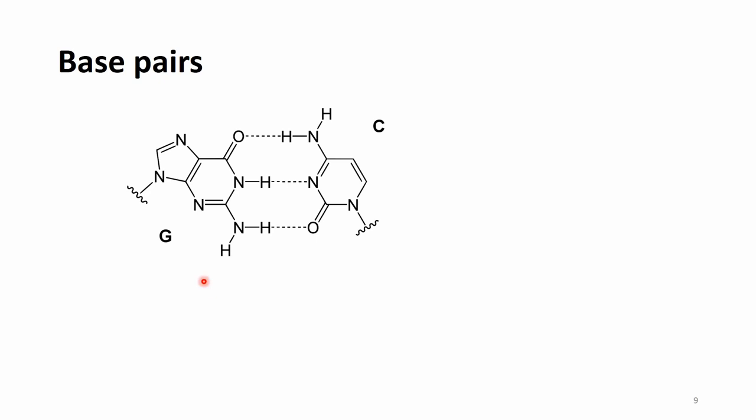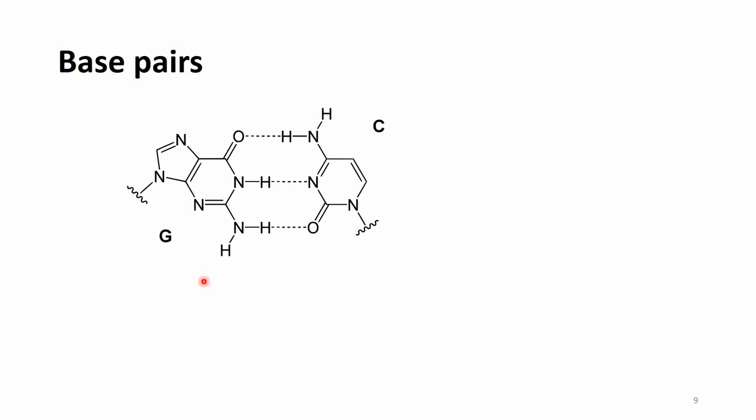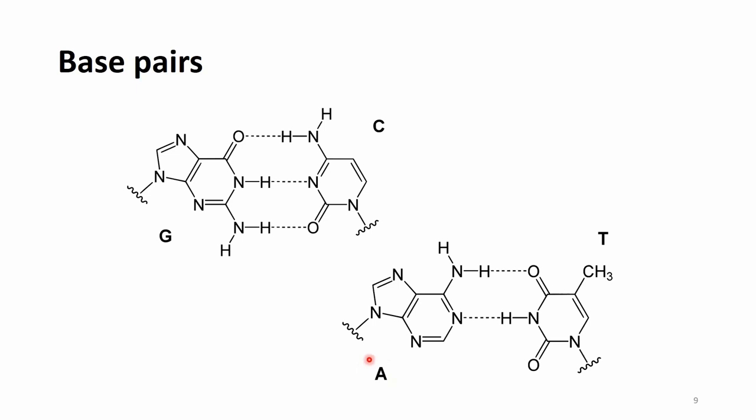There is only one way how the nucleotides can come together and be bound in pairs: guanine and cytosine together, and adenine and thymine together. The nucleotides are bound together with so-called hydrogen bonds — between guanine and cytosine there are three such hydrogen bonds, and between adenine and thymine, two such bonds.